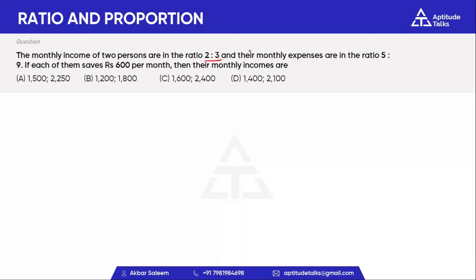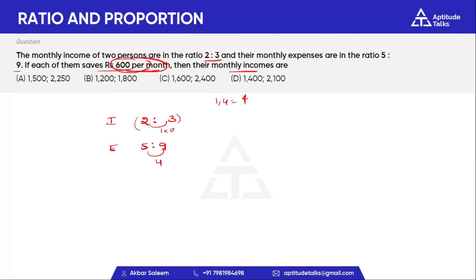For example: monthly incomes of two people are in the ratio of 2 to 3 and monthly expenses are in the ratio of 5 to 9. Each saves 600 rupees per month. We have a direct formula. Income ratio is 2 to 3. Expenditure ratio is 5 to 9. To check the difference, we multiply — the ratio becomes 4 to 8 for income and 4 to 12, with expenditure 5 to 9. This gives the income and expenditure comparison.